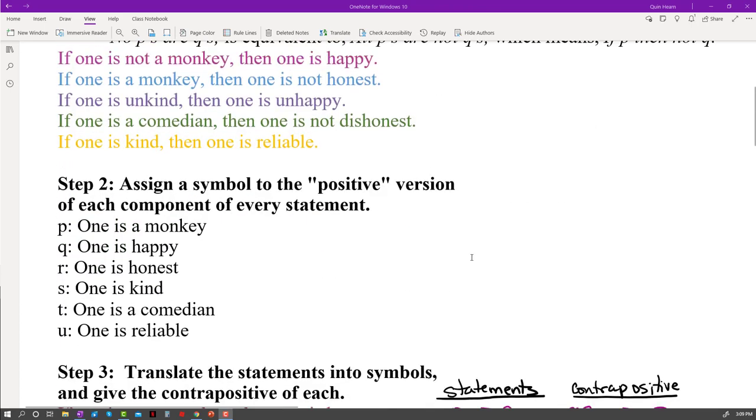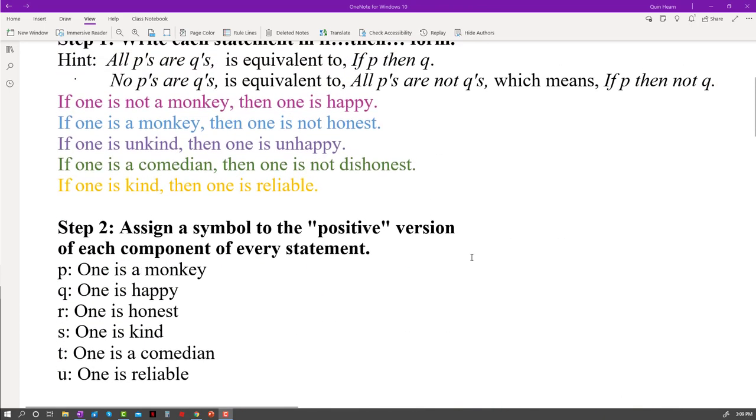And then we identified the components in each of those statements, and we gave each of them a symbol, a letter, a name. So P is going to be one is a monkey, Q, one is happy, R, one is honest, S, one is kind, T, one is a comedian, and U, one is reliable.